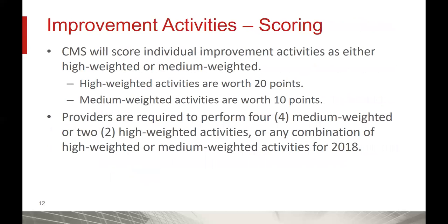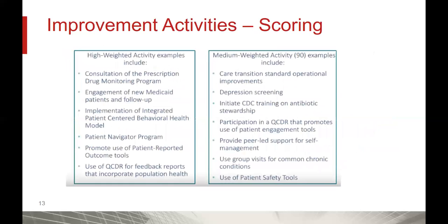Let's jump into how this category is scored. CMS will score individual improvement activities as either high-weighted or medium-weighted. High-weighted activities for most practitioners are worth 20 points, and medium-weighted activities are worth 10. Providers are required to perform either four medium-weighted activities, or two high-weighted activities, or any combination of high-weighted and medium-weighted activities for 2018 to achieve a final total score of 40 points for this performance category. This slide details some examples of high-weighted and medium-weighted activities that CMS has provided.